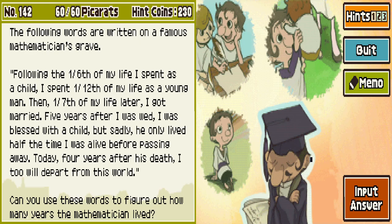Well, we can start with nine because he says five years and four years, so we can at least know that. Now, a sixth of his life he spent as a child, and a twelfth as a young man. So the time he spent as a young man has to be half of the sixth he spent as a child, right? That's how fractions work.